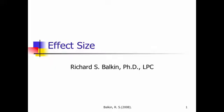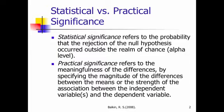Okay, this lecture is going to look at effect size in ANOVA. Recall that statistical significance refers to the likelihood that the rejection of the null hypothesis, or the finding of a statistically significant relationship, occurred outside the realm of chance. So statistical significance is a statement about probability. Practical significance refers to the meaningfulness of the differences. It's the actual magnitude of the differences between the means or the strength of association between how the independent variable is contributing to changes in the dependent variable.